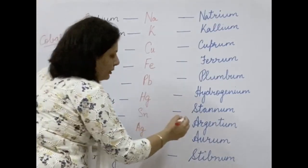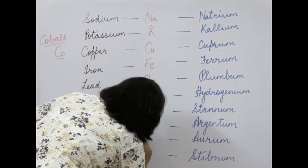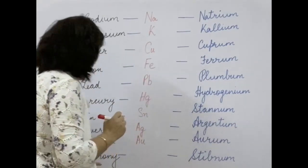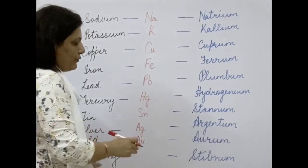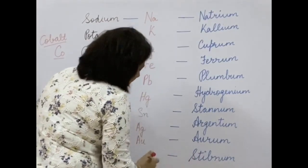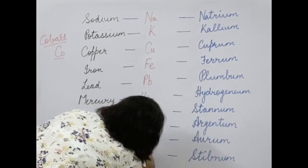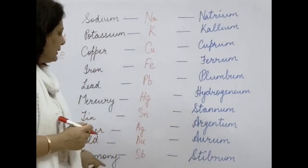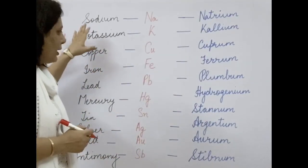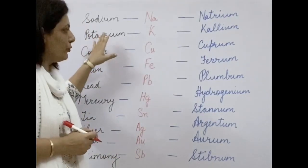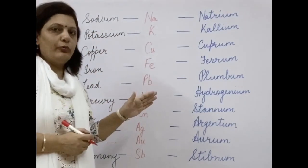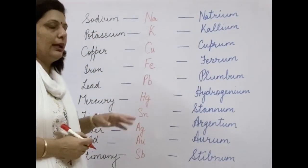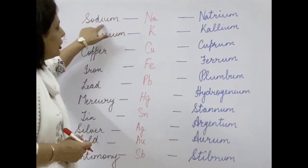Silver is derived from the Latin word argentum, symbol Ag. Gold is derived from the Latin word aurum, symbol Au. Antimony is derived from the Latin word stibium, symbol Sb. These are the anomalies caused by the Latin words from which they are derived, and this is why their symbol does not match their English name.